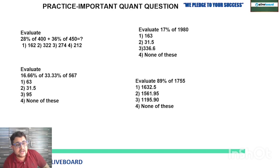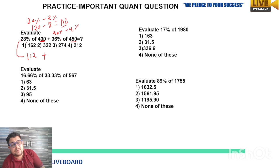First one is 28% of 400 plus 36% of 450. For 28% of 400, we can write 30% minus 2%. 30%: 10% is 40, 3 times is 120, minus 2% is 8, so 112 plus 36% of 450. This can be written as 40% minus 4%. 40%: 45 is 10%, 45 times 4 is 180, minus 4% is 18, so 162. 112 plus 162 is 274. Option 3 is your answer.